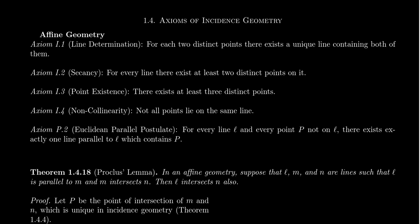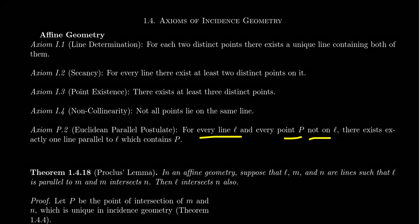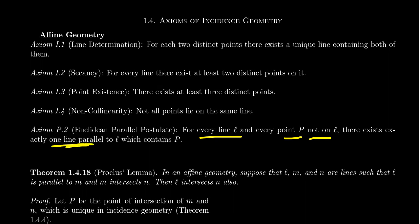The Euclidean parallel postulate gives us the uniqueness of parallel lines: for any line L and any point P not on the line, there exists exactly one line parallel to L which contains the point P.